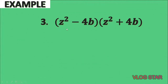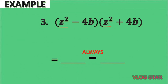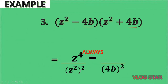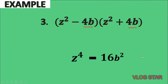For our third example, we have the quantity z squared minus 4b times the quantity z squared plus 4b. They are almost alike — one is minus while the other is plus; the order of the operations is interchanged, but that's no problem. We can still use the shortcut as long as one is plus and the other is minus. Setting up a binomial with a minus sign: the square of z squared is z raised to the 4th. For the second term, the square of 4 is 16 and the square of b is b squared. Therefore the answer is z raised to 4 minus 16b squared.